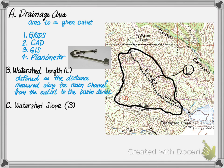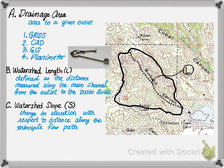Next is watershed slope. Watershed slope is the change in elevation with respect to distance along that principal flow path, or watershed length. It is defined as the change in elevation from E2 to E1 divided by the watershed length, as shown. Slope can be a significant factor, as it suggests how quickly water will move out of a watershed and into another system.